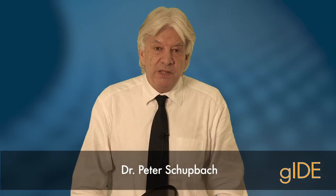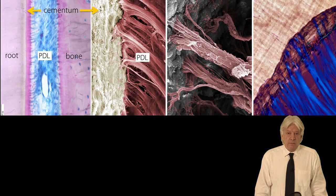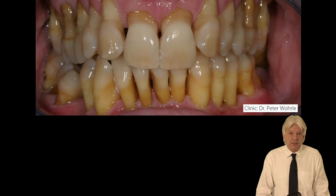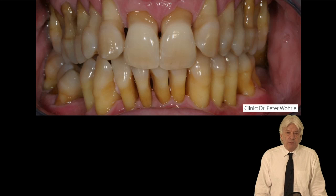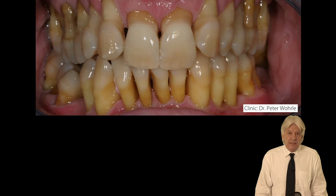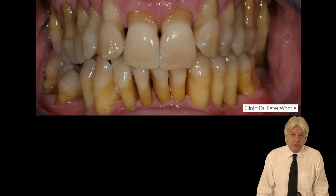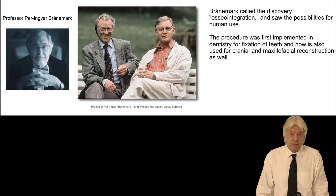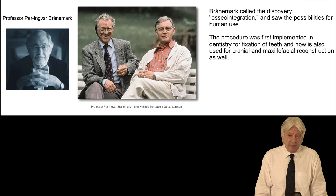Hi, my name is Peter Schuttbach. I will share with you how nicely our teeth are anchored in the alveolar bone. But what is to do if periodontal diseases destroy this perfect anchorage in bone? Then the tooth must be replaced by a piece of metal — an implant.